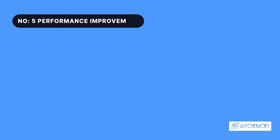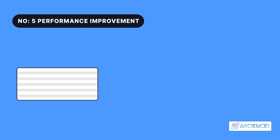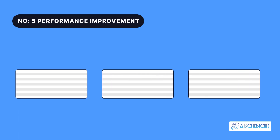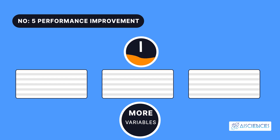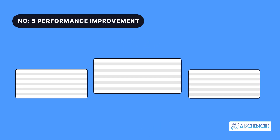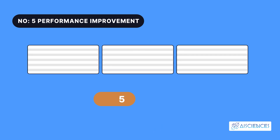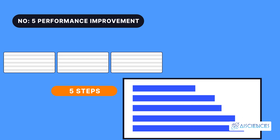Step 5: Performance Improvement. This final step might involve the selection of a different model altogether, or you might introduce more variables to improve efficiency. That's the reason you need to spend a lot of time during the data collection and data preparation steps. Regardless of any model you choose, you can use these five steps to structure the technique.